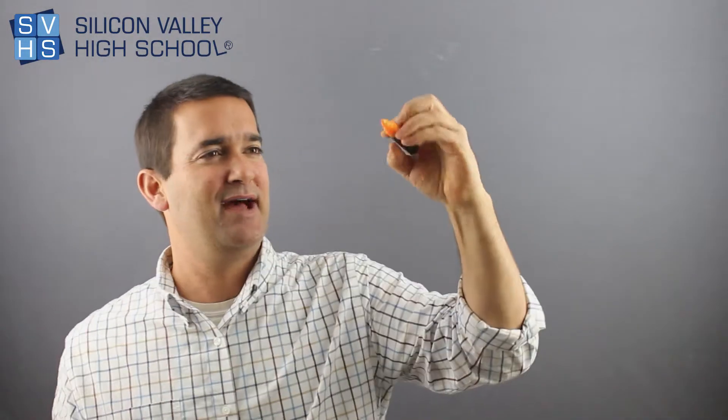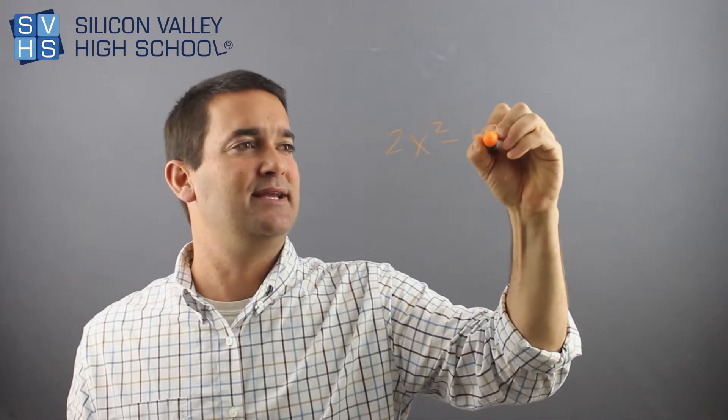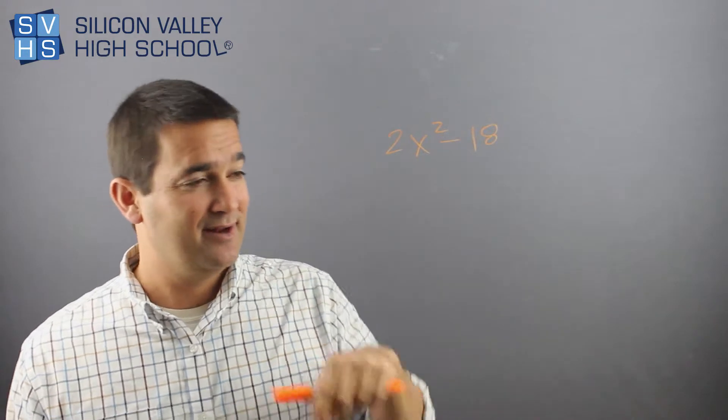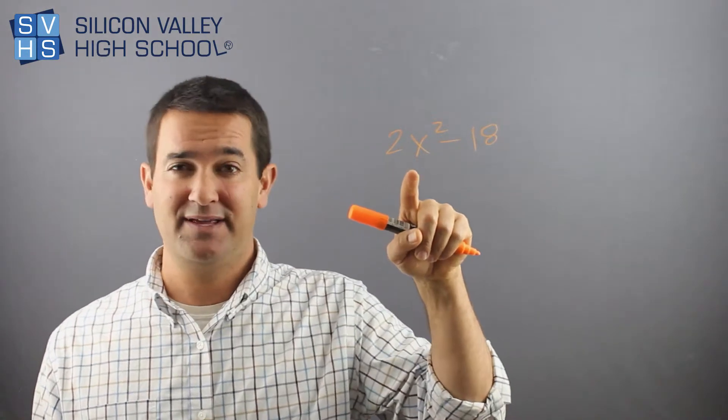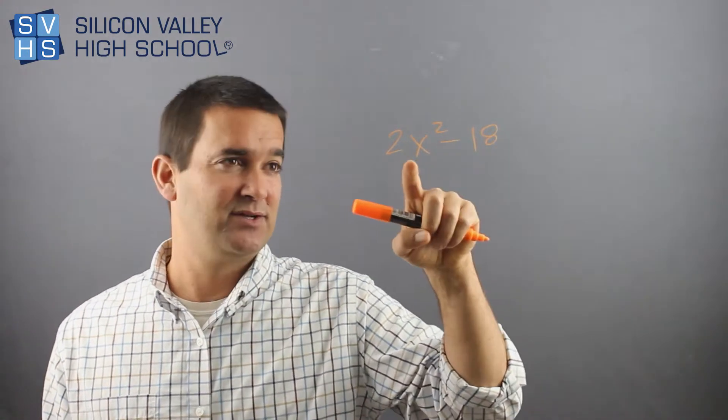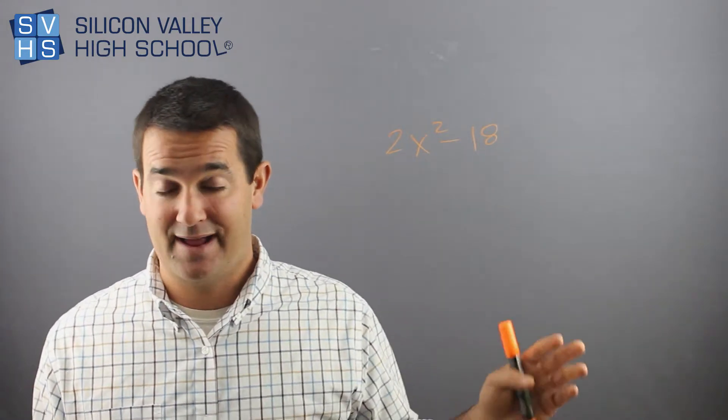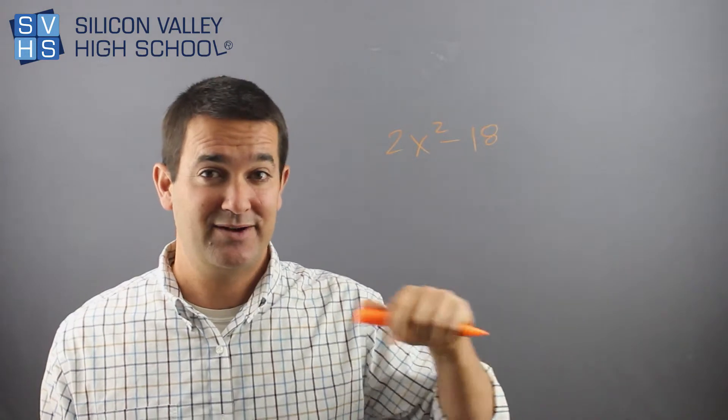You could have 2x squared minus 18. And you see it and you're like, well, there's a minus sign. I think I have a difference of squares, but there's definitely no root of 18 and also no root of 2. So you just move on. Like I'm going to get this wrong. I have no idea. This is not a difference of squares.